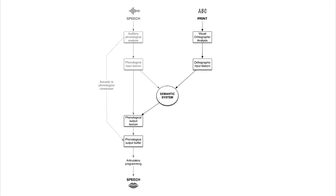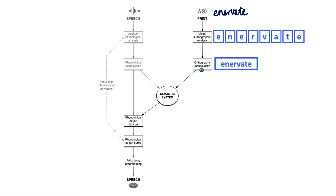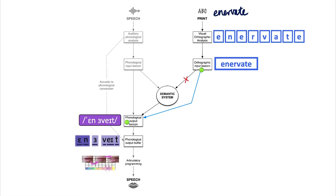What about a word we've seen before but don't understand? The word 'enervate' — we see it, we recognize the letters in order, we pass that to the orthographic input lexicon. Yes, we've seen this word, but there's no connection — we don't know what it means. Now if we want to say that word without the semantic system, we need to pass it to the output lexicon via a different route. There's a side path here that passes it to the phonological output lexicon where the spoken production of that word is stored. It says yes, that word is pronounced like this. Those phonemes are assembled, a motor plan is produced, and we can say that word.